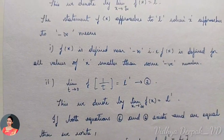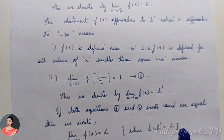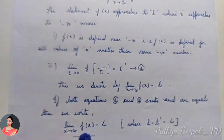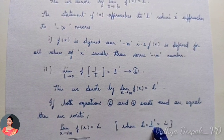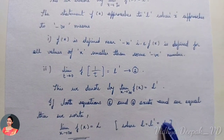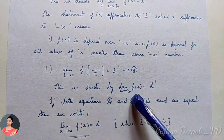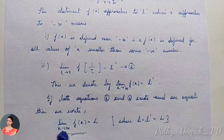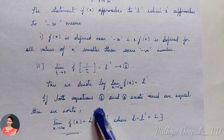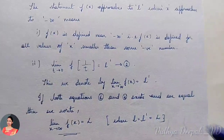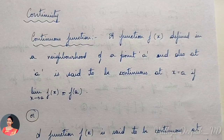Combining equation 1 and equation 2, we get: limit as x tends to infinity of f(x) is equal to L, where L equals L', which we call capital L. This covers both the plus infinity and minus infinity cases combined into: limit as x tends to infinity of f(x) equals L.